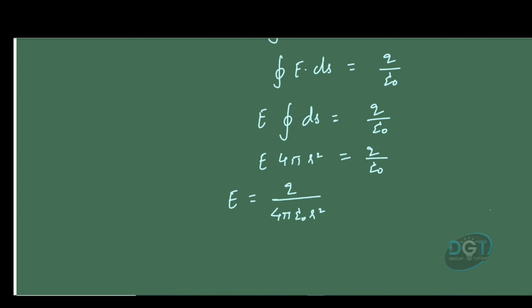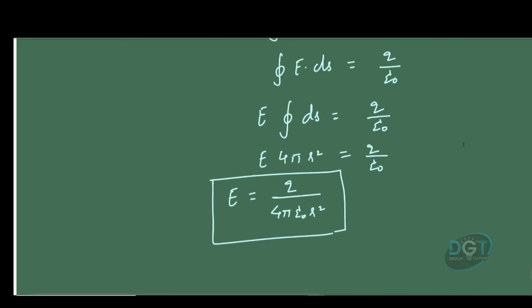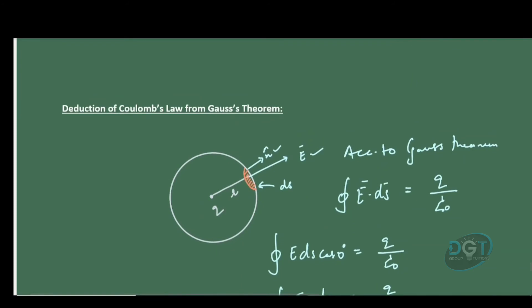This is the electric field intensity at any point at distance R from charge q. If another charge q₀ is placed there, the force experienced by that charge is F = E·q₀, where E = q/(4πε₀R²).